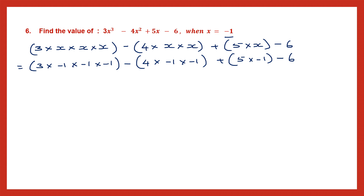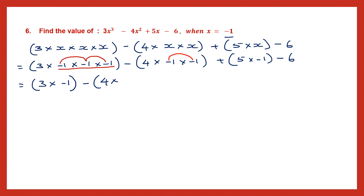So we're going to solve this. Let's take all these minus 1s first. Minus into minus is plus, plus into minus is minus. So here we will write 3 into minus 1, because minus into minus is plus and plus into minus is minus. We'll write 4 first, then multiply the signs: minus into minus is plus, so 1 into 1 is 1, that's plus 1. Then for the next part, multiply plus 5 and minus 1 — plus into minus is minus — so we write minus 5, minus 6.